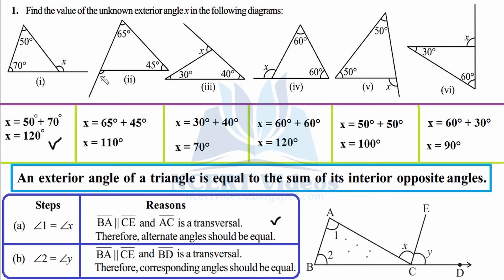Here the exterior angle's opposite interior angles are 65° and 45°, so 65 plus 45 gives you 110°, and that is the value of X. Again, the exterior angle's opposite angles are added: 40 plus 30 gives 70°. Then 60 plus 60 gives 120° as the exterior angle.